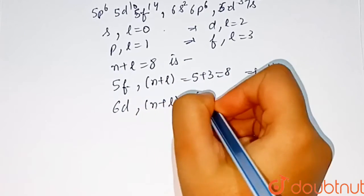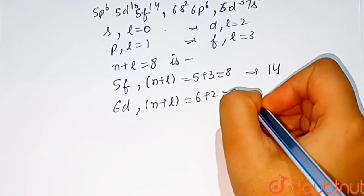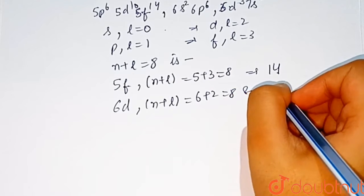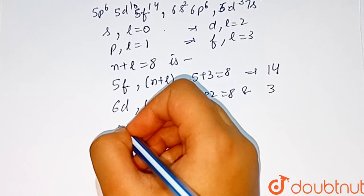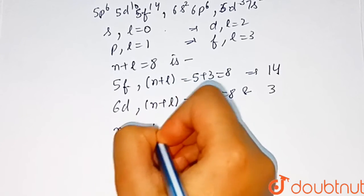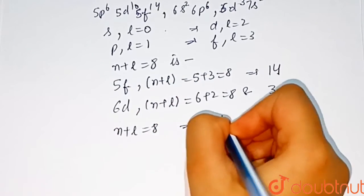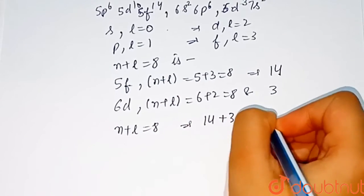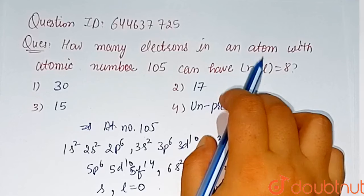equal to 8. And number of electrons present in 6d is 3. Total number of electrons present in n plus l equal to 8 is 14 plus 3 which is equal to 17.